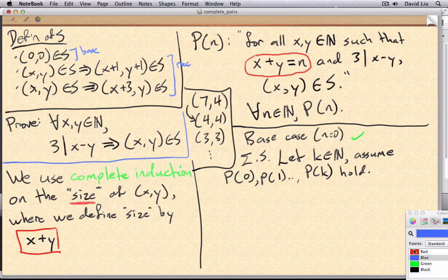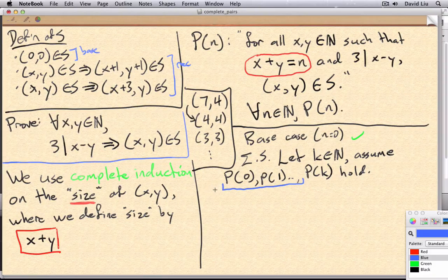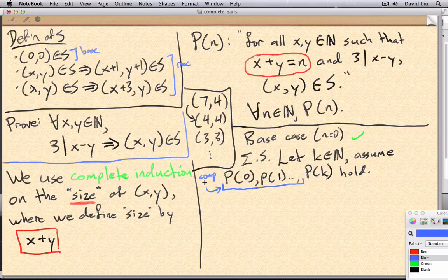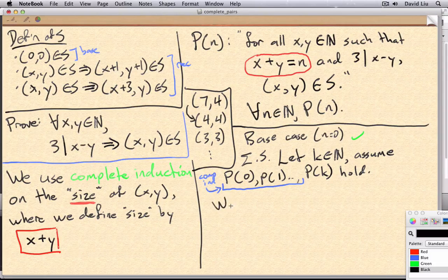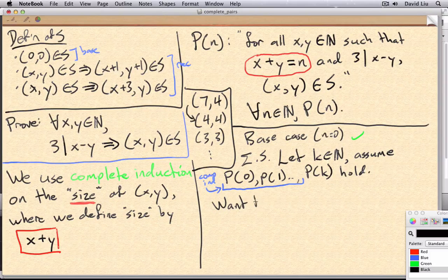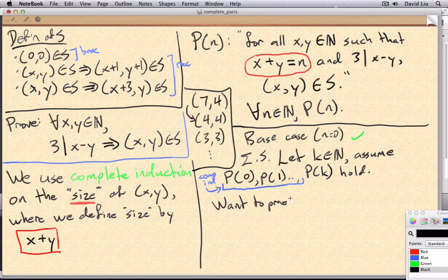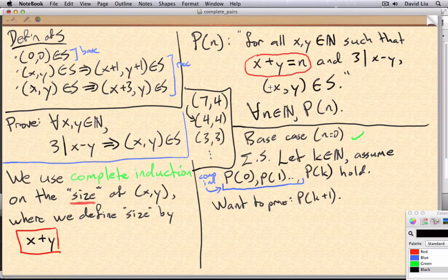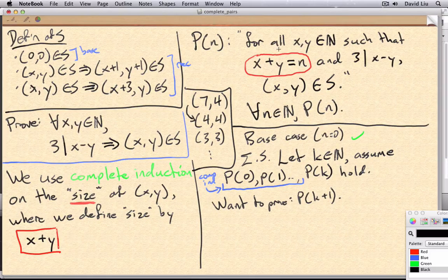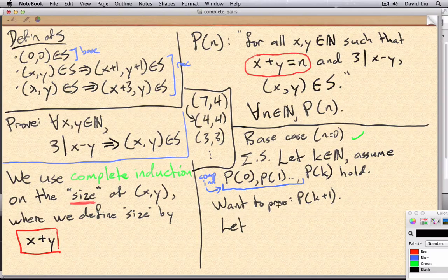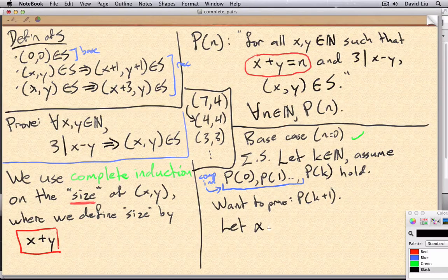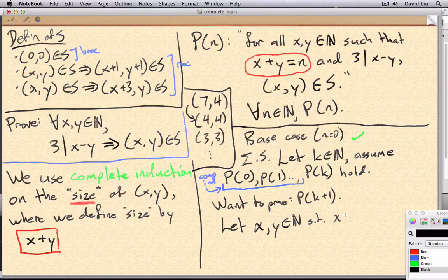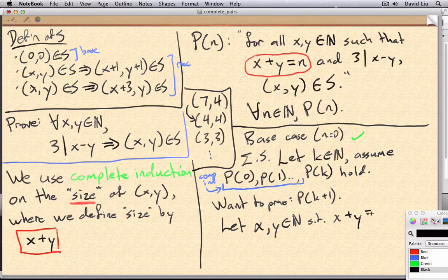And of course, these extra assumptions, this is what makes it complete induction. So we want to prove p of k plus 1. How do we prove this? It's a for all. So let's pick arbitrary ones that satisfy the properties that we're interested in.